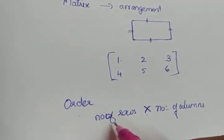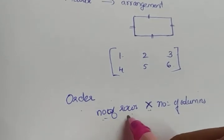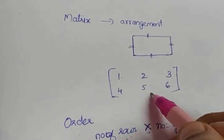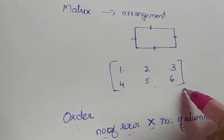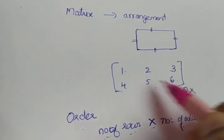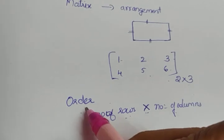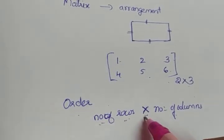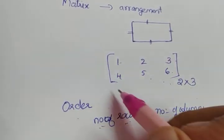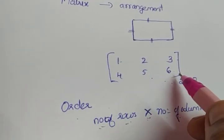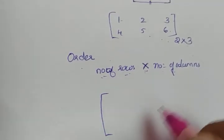The order of a matrix means number of rows by number of columns. For this matrix, how many rows are there? Two rows. By how many columns? Three. So the order of this matrix is two by three. Rows are horizontal arrangements and columns are vertical arrangements.